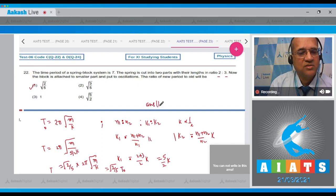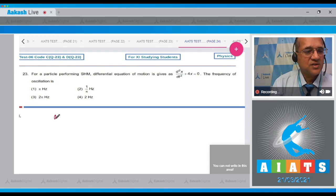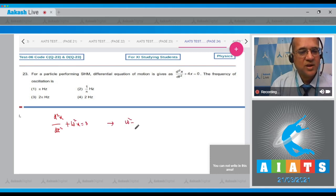So what is T? T is equal to square root of 2/5 times the original time period. So the ratio of T to T naught is equal to the first option. Answer is one. Question number 23: For a particle performing simple harmonic motion, the differential equation of motion is given as d squared x by dt squared plus 4x equals 0. The frequency of oscillation? Here, student, this is the equation like d squared x over dt squared plus omega squared x is equal to 0.